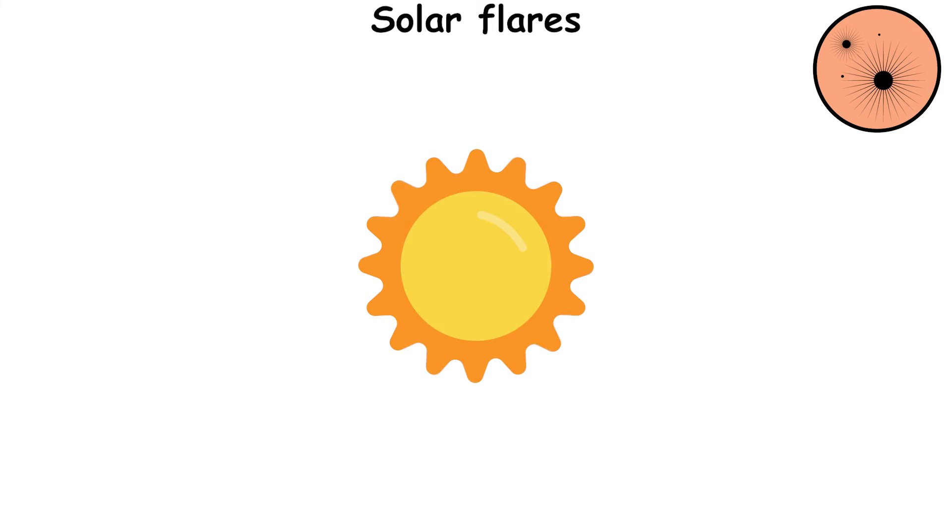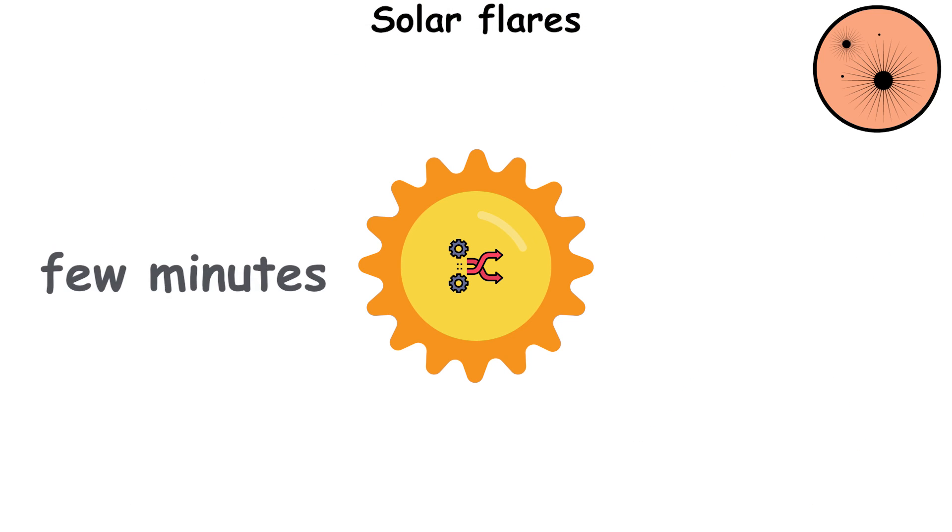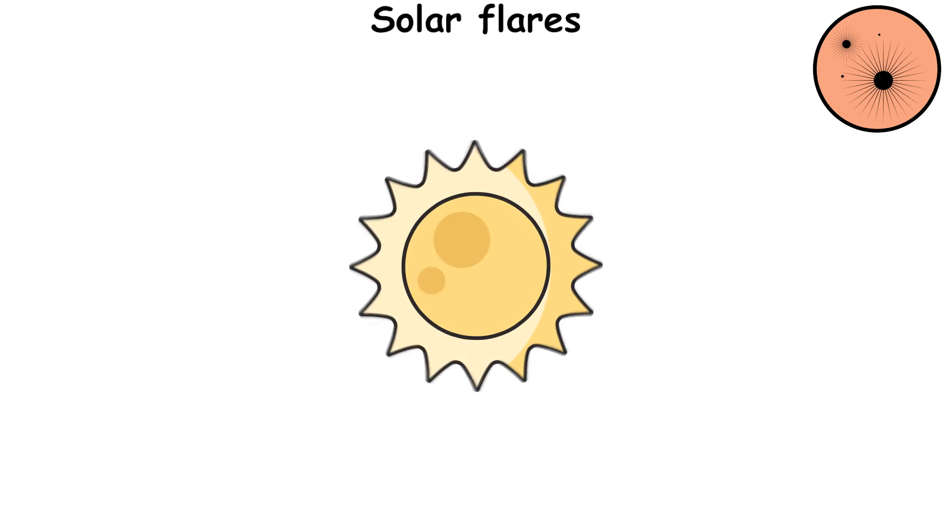Solar flares are powerful and rapidly developing local processes on the Sun that release significant energy. Their development time is a few minutes, and their decay time is a few hours. The flares occur in the region of active zones surrounding sunspots, most often between sunspots with opposite magnetic polarities.